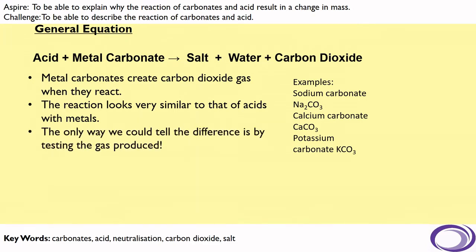Now, the reaction does look similar to that of acids with metals, but the only way we can tell the difference is by testing the gas which is produced. Now, in this case, we are producing carbon dioxide, which can be tested by using lime water. And if you bubble that gas through lime water, it will turn cloudy. And that's how we can see the difference between carbon dioxide and hydrogen, because hydrogen would not turn lime water cloudy. There's a different test for hydrogen gas, and we saw that in our video for metals and acids.